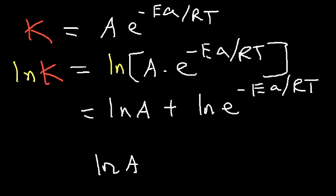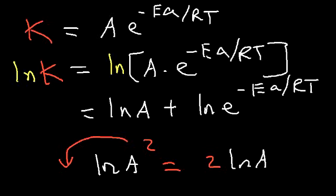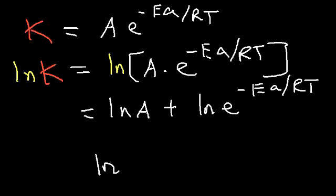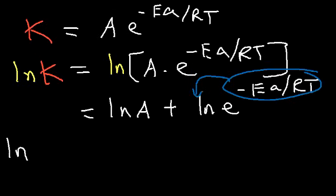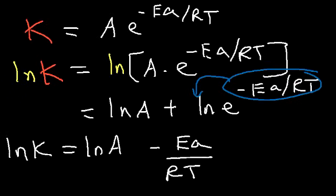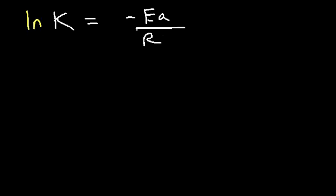Another property of logs allows us to move the exponent to the front. So we take that exponent and move it to the front. We now have ln k equals ln A, and then it's minus Ea over RT times ln e. The natural log of e is 1, so that disappears. What we now have is: ln k = −Ea/RT + ln A.